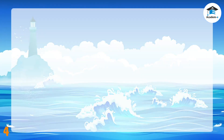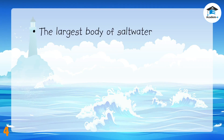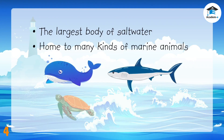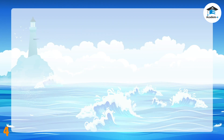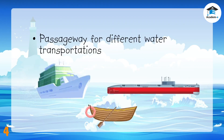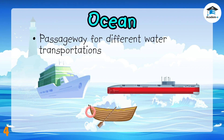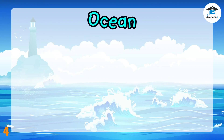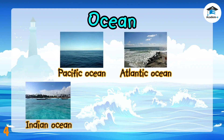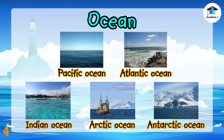Now let's see if you can still remember the different waterforms. It is the largest body of saltwater. Many kinds of marine animals like whales, sharks, turtles, and dolphins live here. Different water transportation like ships, submarines, and boats travel here. What waterform is this? Right, it is an ocean! Do you know that there are five oceans in the world? These are the Pacific Ocean, Atlantic Ocean, Indian Ocean, Arctic Ocean, and Antarctic Ocean.